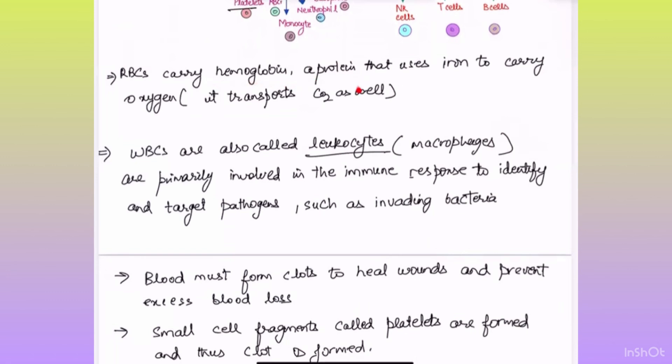RBCs carry hemoglobin, a protein that uses iron to carry oxygen. It transports CO2 as well. White blood cells are also called leukocytes and they are primarily involved in immune response to identify and target pathogens such as invading bacteria.